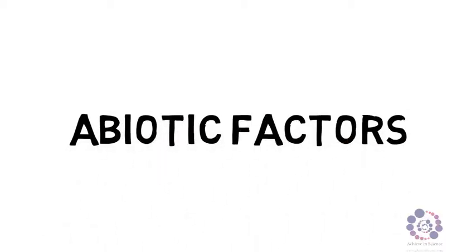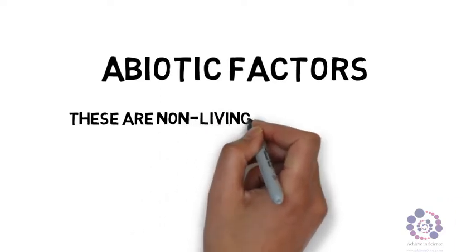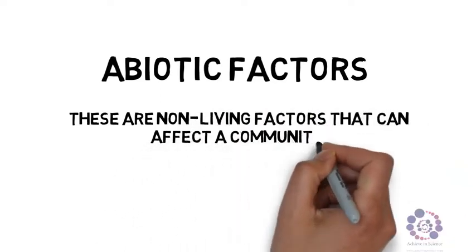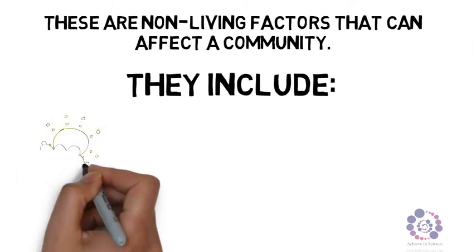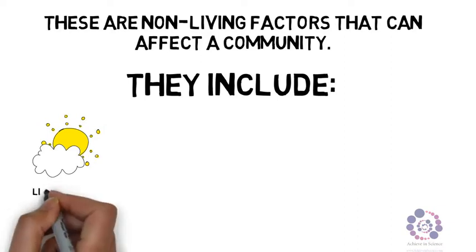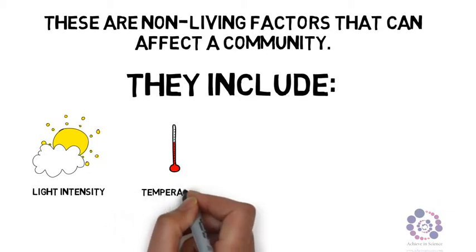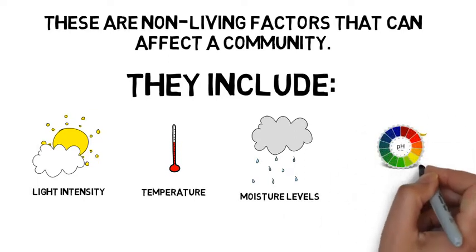This short video is about the difference between abiotic factors and biotic factors. The definition for an abiotic factor: these are non-living factors that can affect a community. These include things like the light intensity, the temperature, and the moisture level.